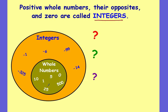Whole numbers are all positive and also include zero — positive five, positive five hundred, positive twenty-five, and so on. Integers include all of these positive whole numbers but also their opposites, meaning the negative whole numbers: negative three hundred twenty-five, negative one, negative six, negative ninety-nine, negative fourteen.